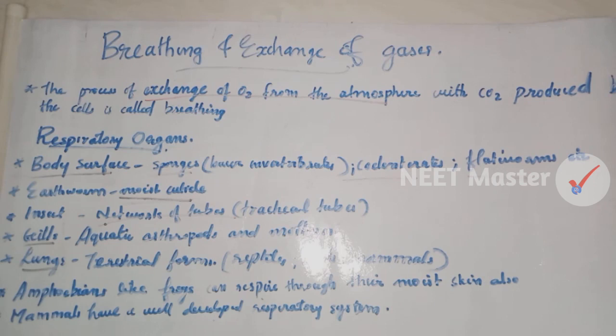Vertebrates such as fish use gills, while reptiles, birds, and mammals use a respiratory system based on lungs. Amphibians like frogs can respire through moist skin. Mammals also have a well-developed respiratory system. So we have different types of respiratory systems.